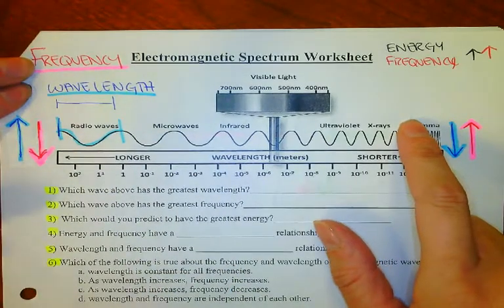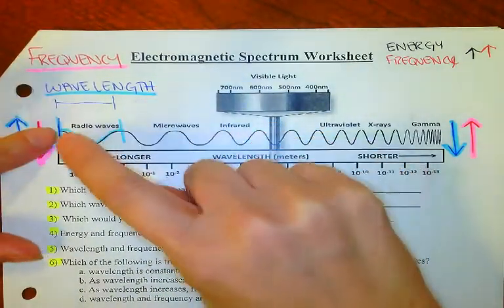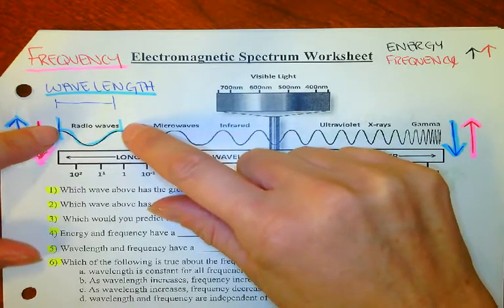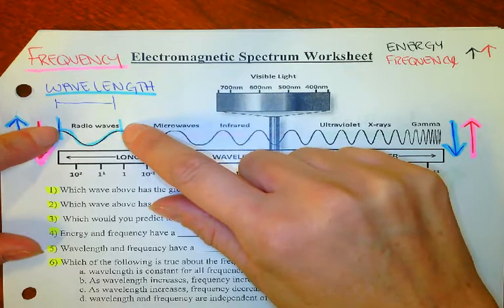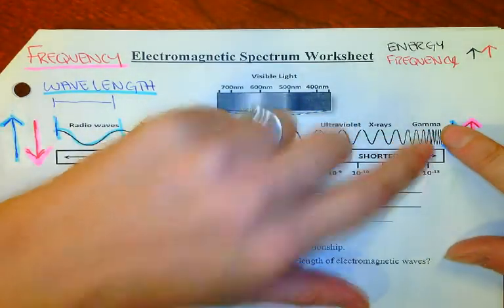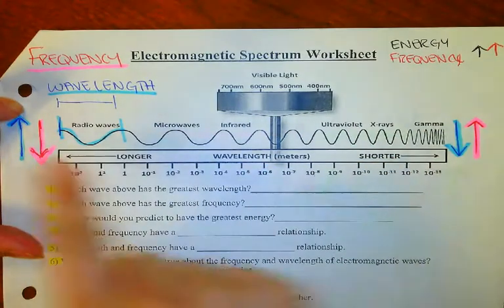So some vocab that we need to review. Wavelength is the length between the repeating segments of the waves, from crest to crest like this. Over here, you can see that's a very long wavelength. Over here, we're talking about very little wavelengths. That's why I drew in these blue arrows.